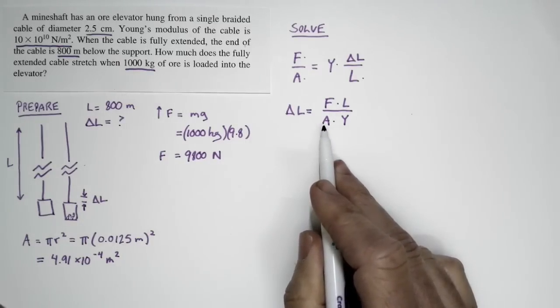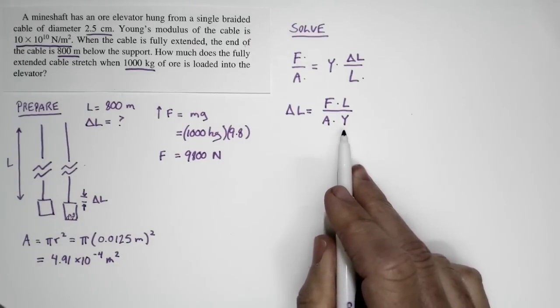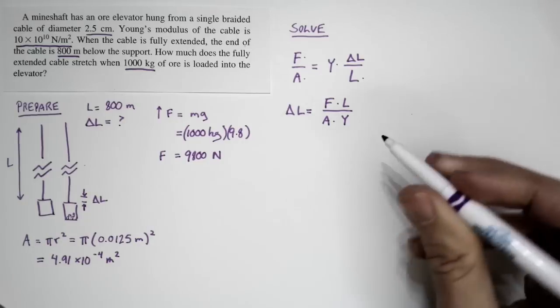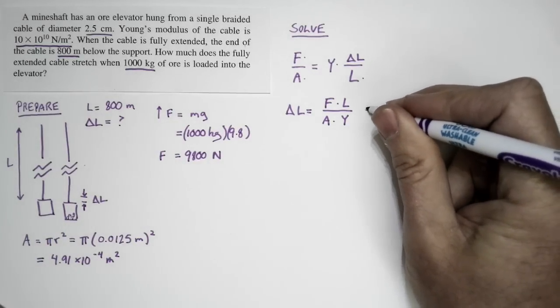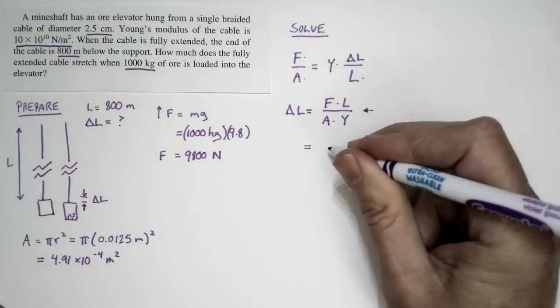Stouter cable—if this got bigger, I'd expect a smaller stretch. Bigger Young's modulus means less stretchy, so I'd predict a smaller stretch. This equation seems reasonable, and in fact, we have everything we need in this equation.